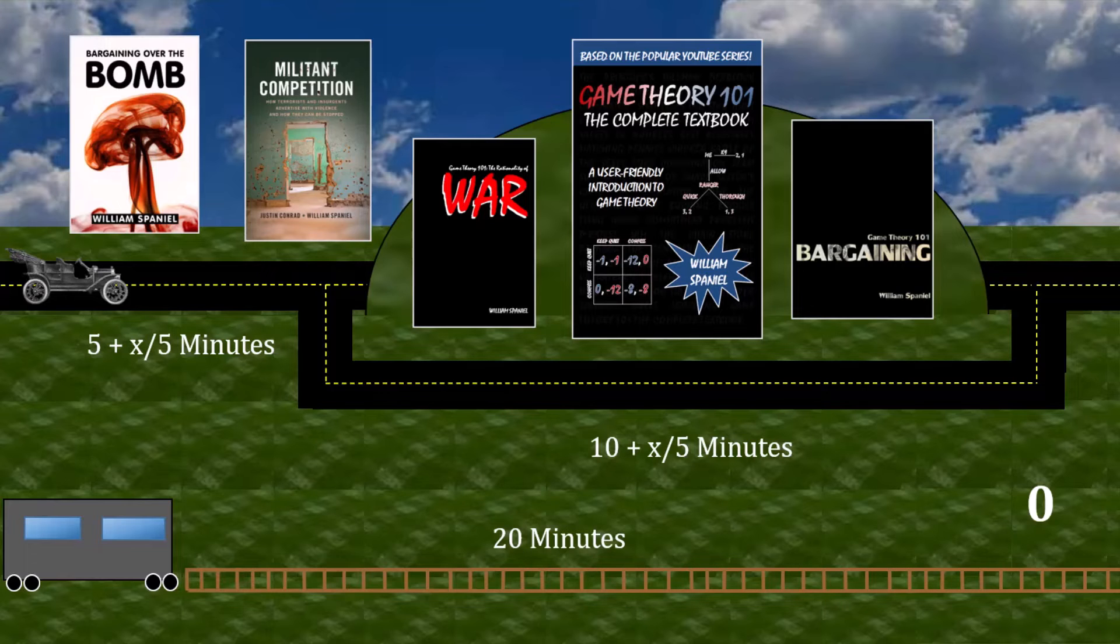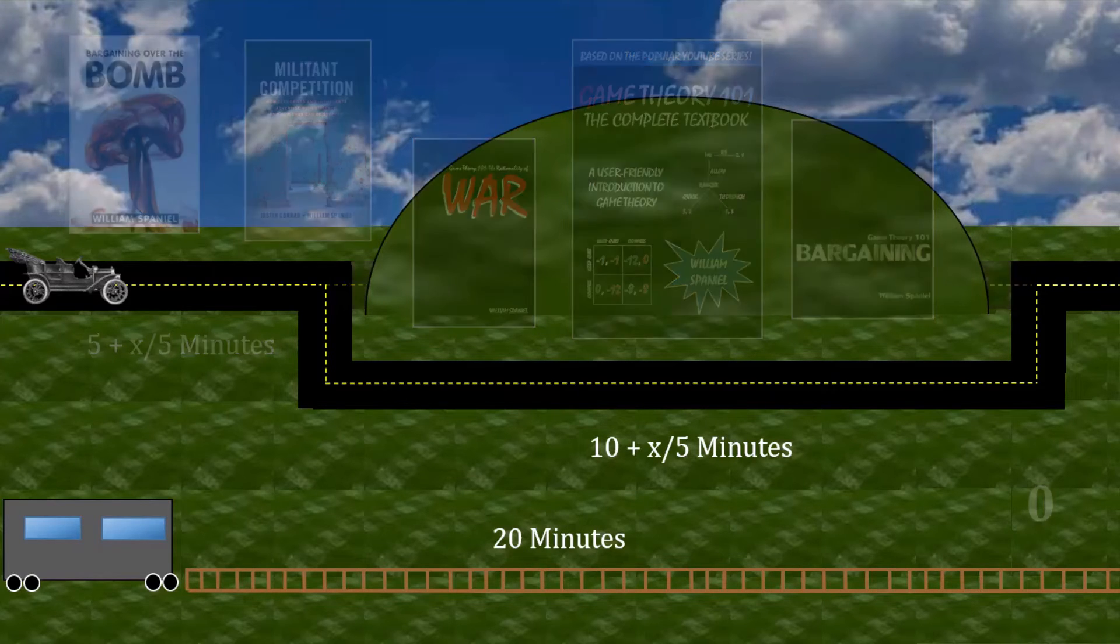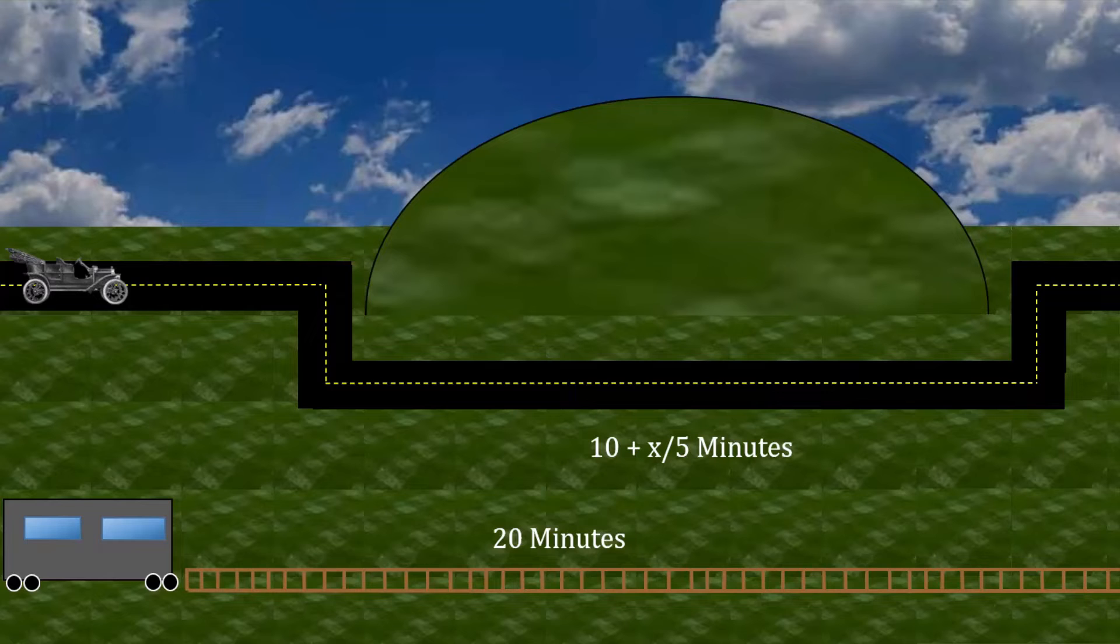Are you ready for the answer? Let's start off by focusing on the existing road and how travel times work under those circumstances. Clearly, not all 100 commuters would want to take the trolley. If they all did, then each would have a travel time of 20 minutes. But any given commuter could realize that by taking their car instead, they would arrive at their destination in just over 10 minutes. Much better than sticking to the trolley.